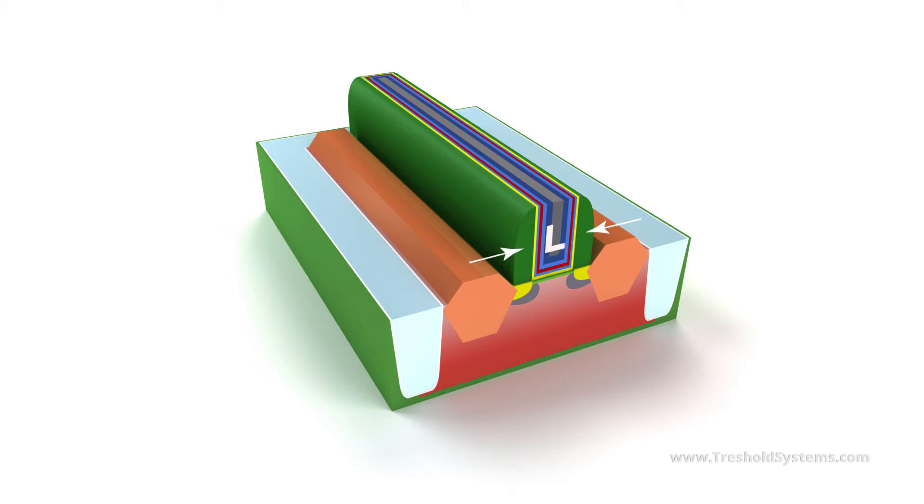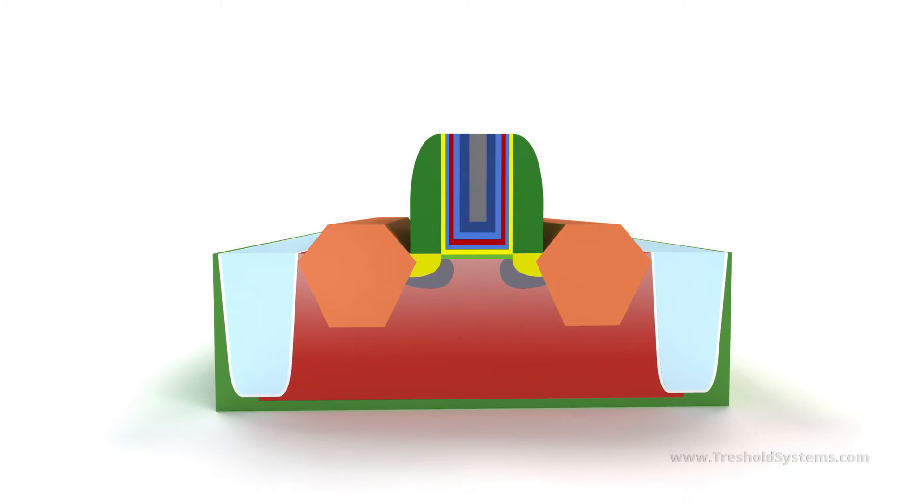The short dimension of the gate electrode is called the length, and the long dimension is called the width. When the gate electrode is energized with a voltage, an electric field is established that inverts the channel, forming a conductive pathway between the source and the drain.